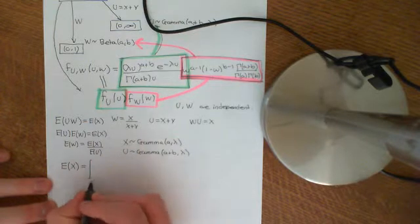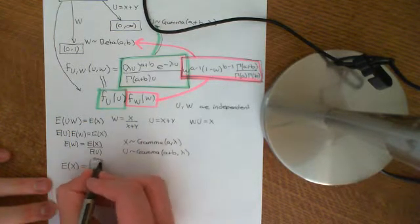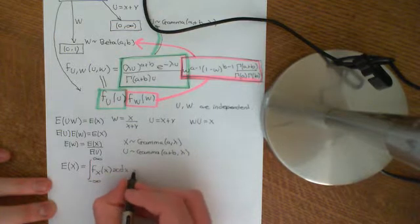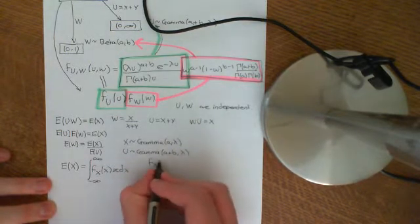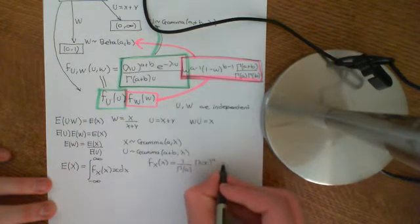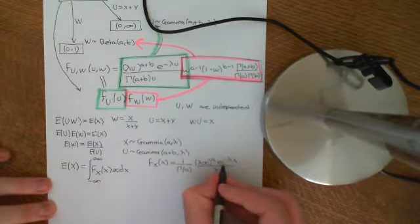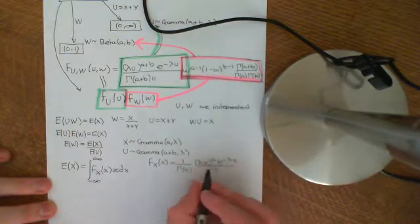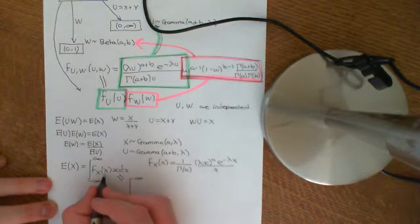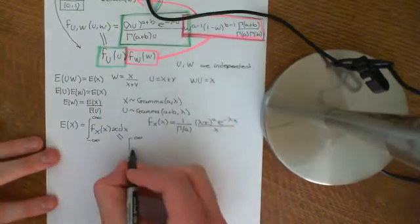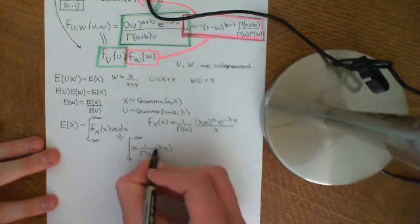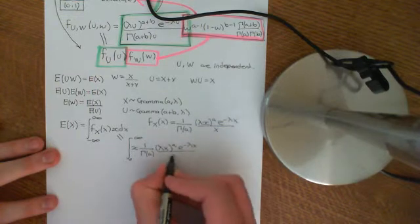The expected value of X is going to be the integral from negative infinity to infinity of the probability density function of X evaluated at little x, times little x, dx. Of course, the probability density function for a gamma random variable is one over gamma(A) times lambda·x to the power of A, times e to the negative lambda·x, divided by x, on the positive real numbers and zero everywhere else. So this integral becomes the integral from zero to infinity. Then we have x from the definition, times one over gamma(A), times (lambda·x) to the power of A, times e to the negative lambda·x, divided by x, dx.